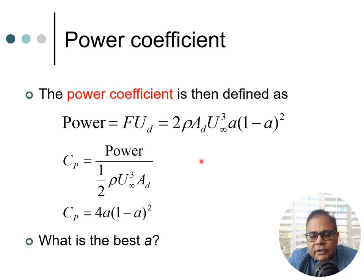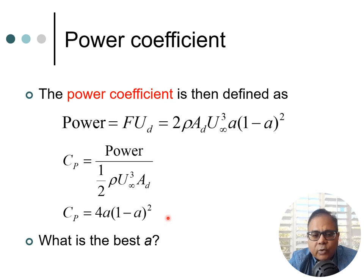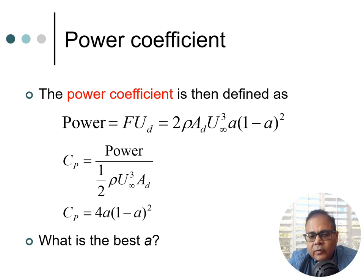Now let's look at the power coefficient, obtained by non-dimensionalizing the power value. The power expression is 2 rho A_d u-infinity cubed times a(1 minus a) squared. Dividing by half rho u-infinity cubed A_d gives a compact equation: C_p equals 4a times (1 minus a) squared. This is entirely dependent on the induction factor a. As engineers, we immediately ask: what value of a maximizes C_p?